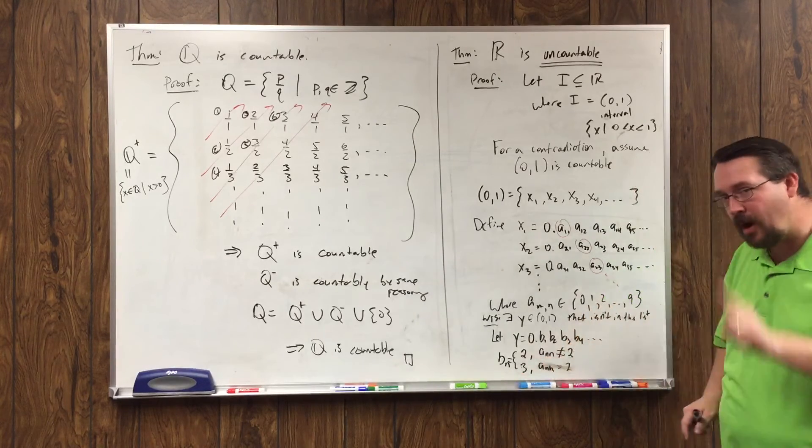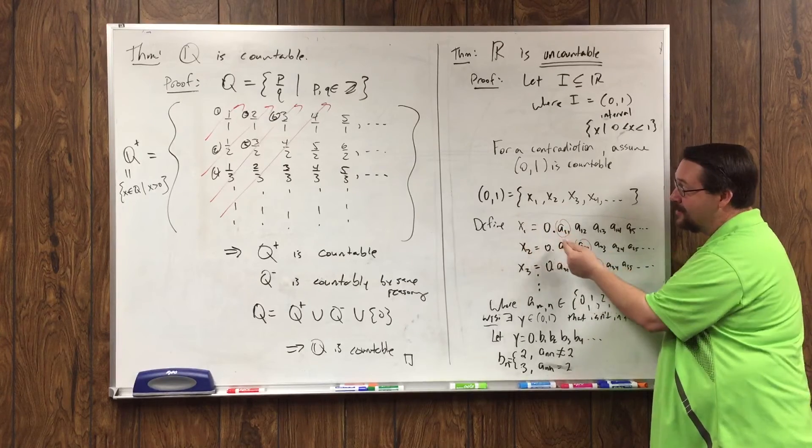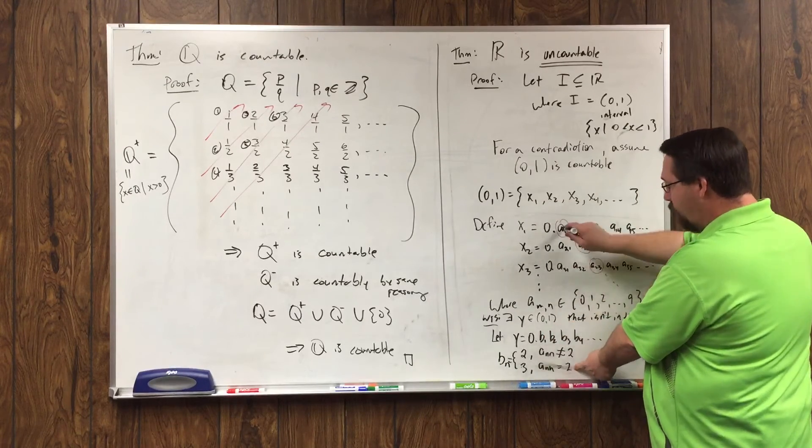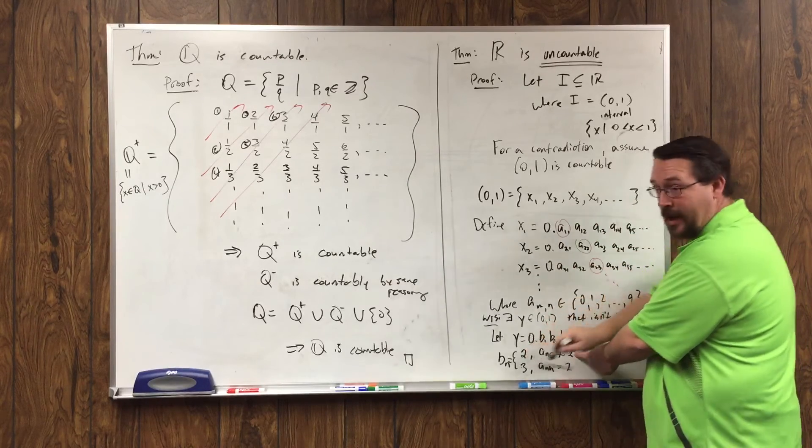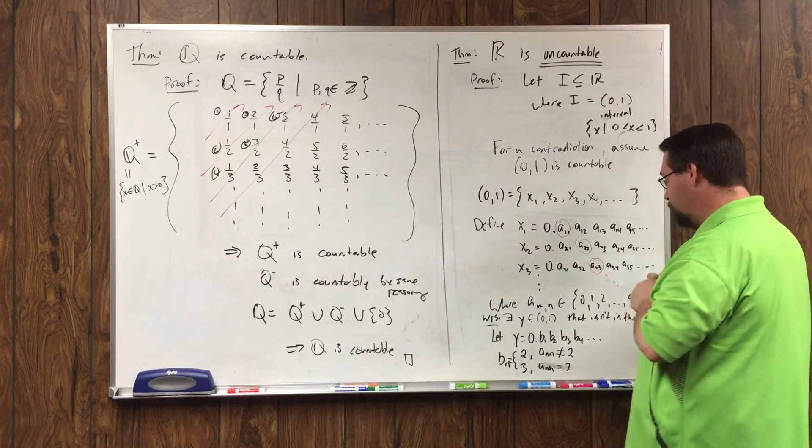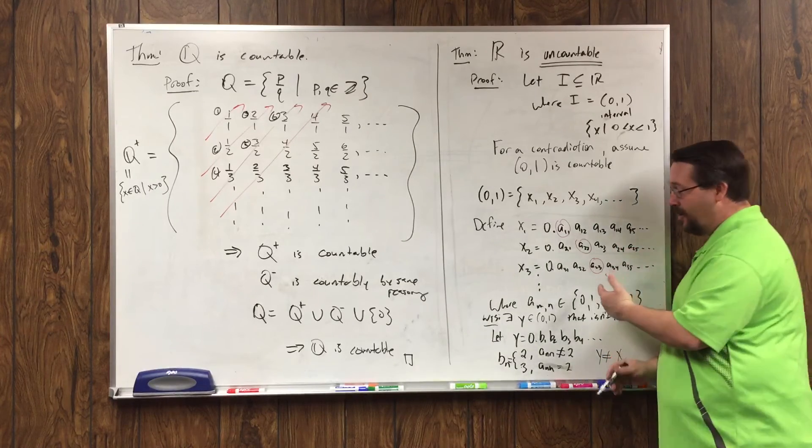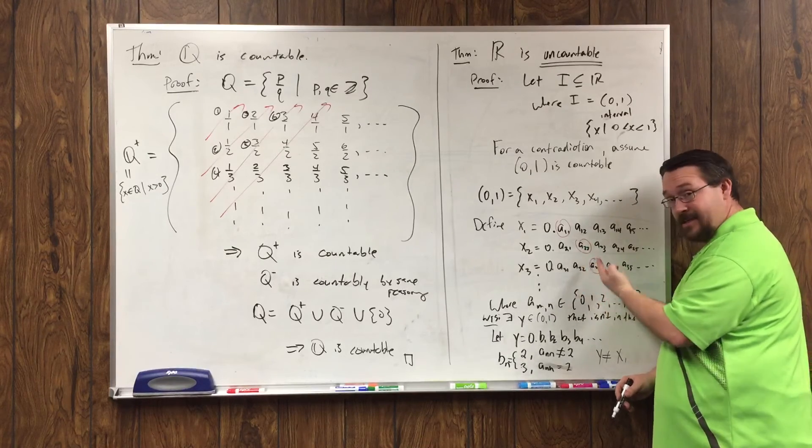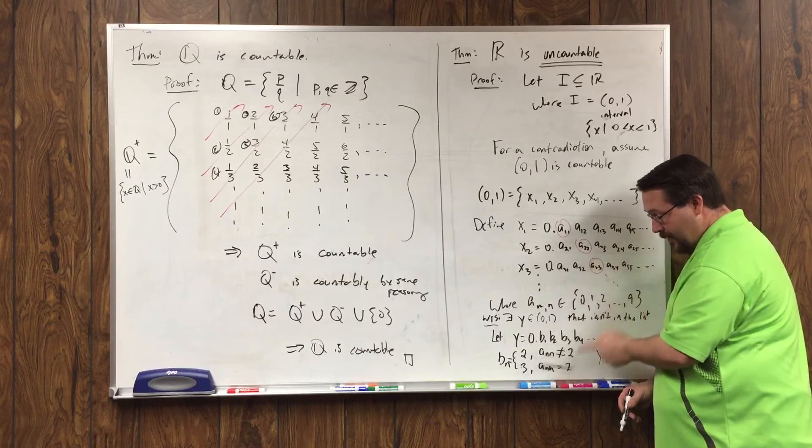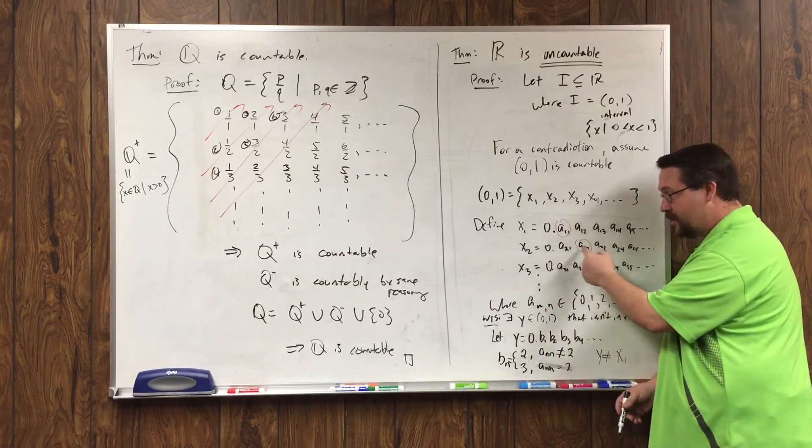Now, think about that for a second. Do you see the problem? y can't be x1 because if a11 was 2, then y has a 3 right here. But if a11 was not 2, y has a 2 there. So y differs from x1 at this place. So y is not equal to x1. In fact, y can't be equal to x2 either because no matter what this is, at the second decimal place, it disagrees with y. x2 disagrees or does not match y because that right there is a 2. If that's a 2, then y has a 3 there. And if that's a 3 or anything other than a 2, y has a 2 there. So it disagrees with that one.